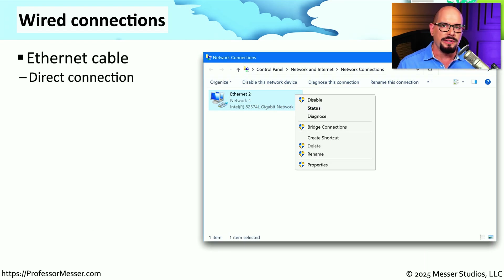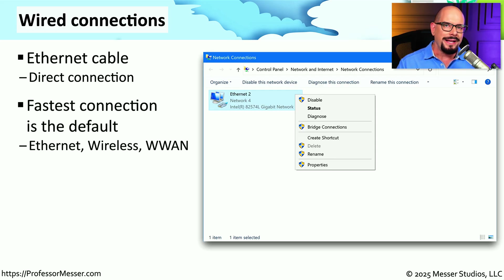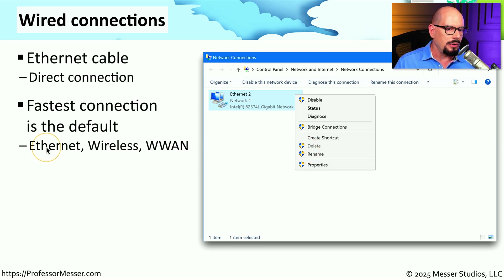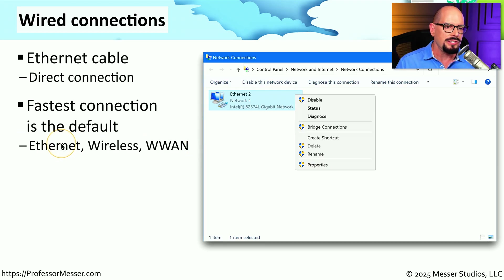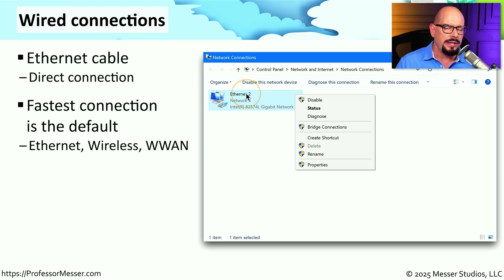Wired connections are relatively straightforward. You plug an Ethernet cable into the back of your computer and connect it to the rest of your network. That direct connection is usually the fastest, and in Windows networking the fastest connection is always the default connection. So if you're connected simultaneously to an Ethernet network, a wireless network, and a wireless wide area network, it's most likely that your Ethernet network is the fastest, which means it will be the default connection. To set specific configuration parameters of the wired network, you can right-click on the Ethernet adapter and choose Properties.